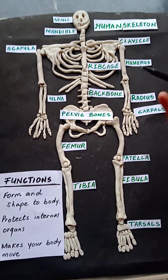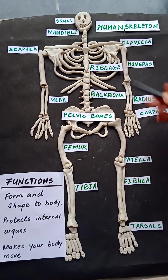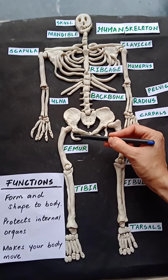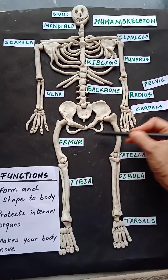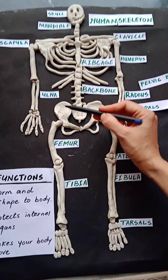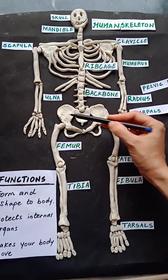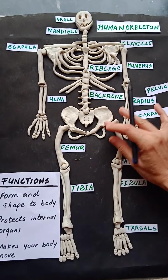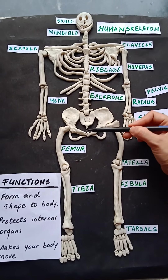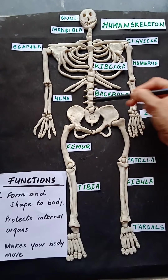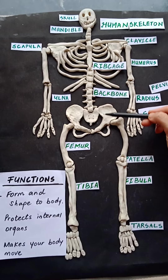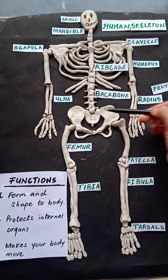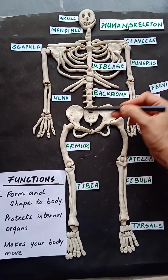Now moving on, we have our pelvic bones. This entire area — the hip bones, sacrum, and coccyx — together these are called the pelvic bones. This portion is called the ileum, and sometimes we call this area the pelvic girdle as well.